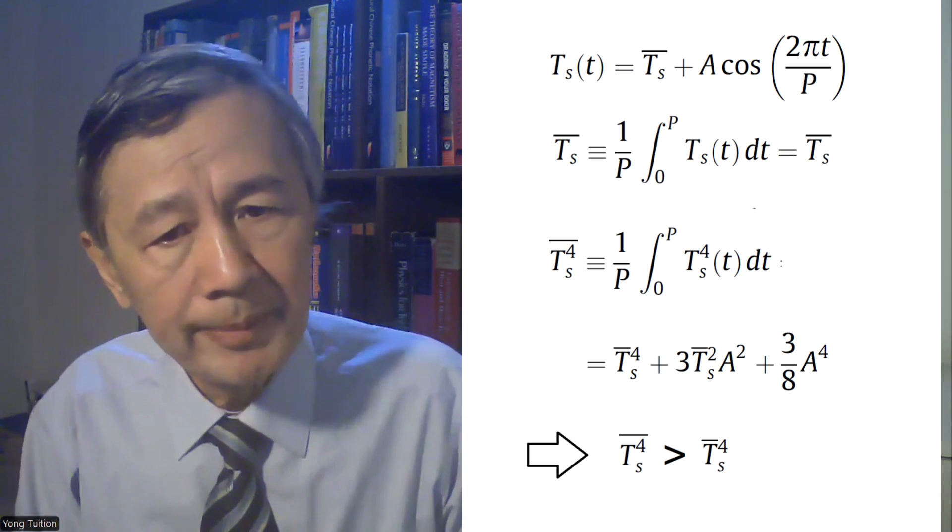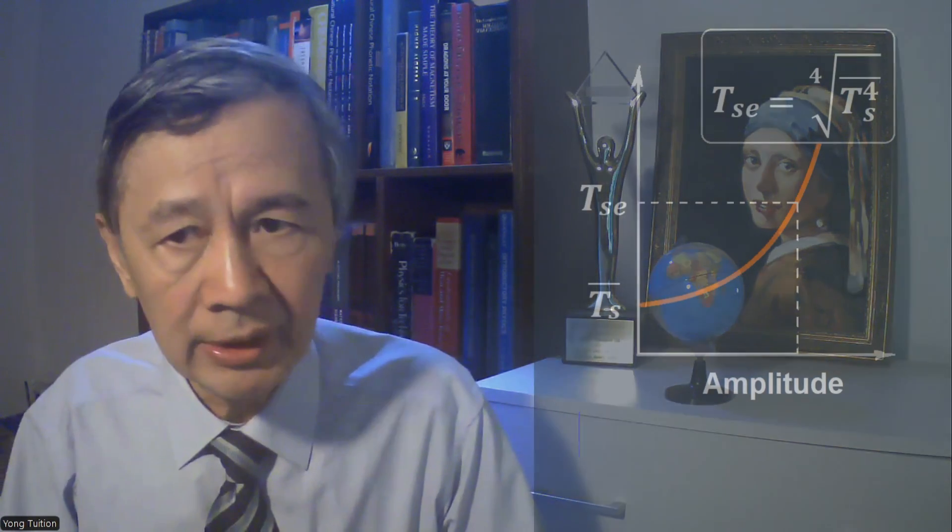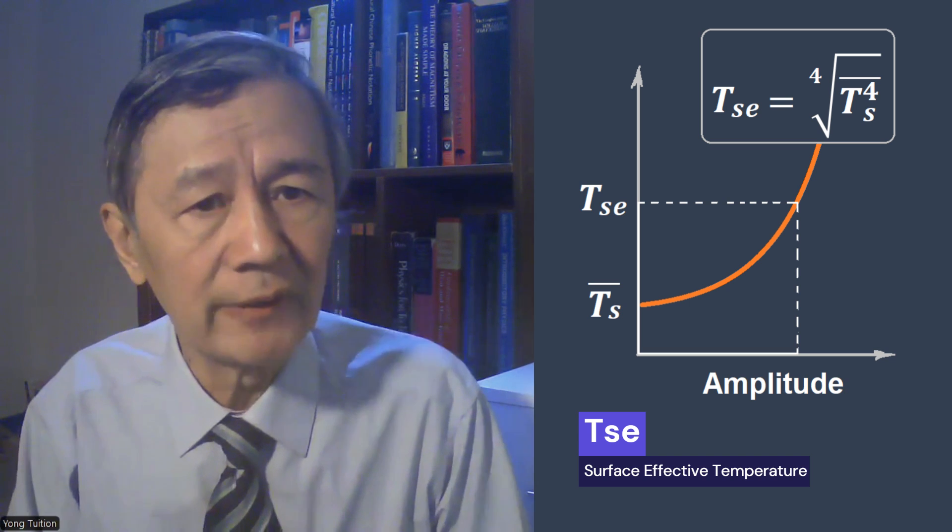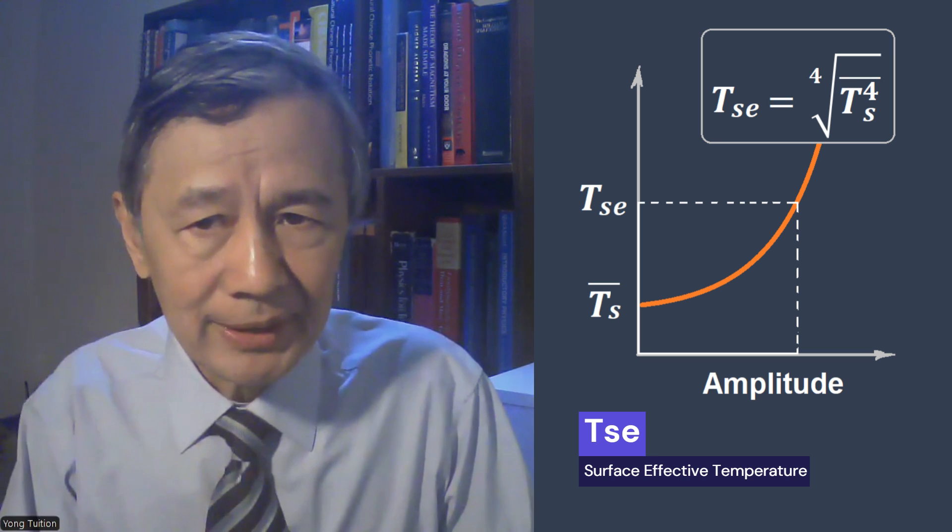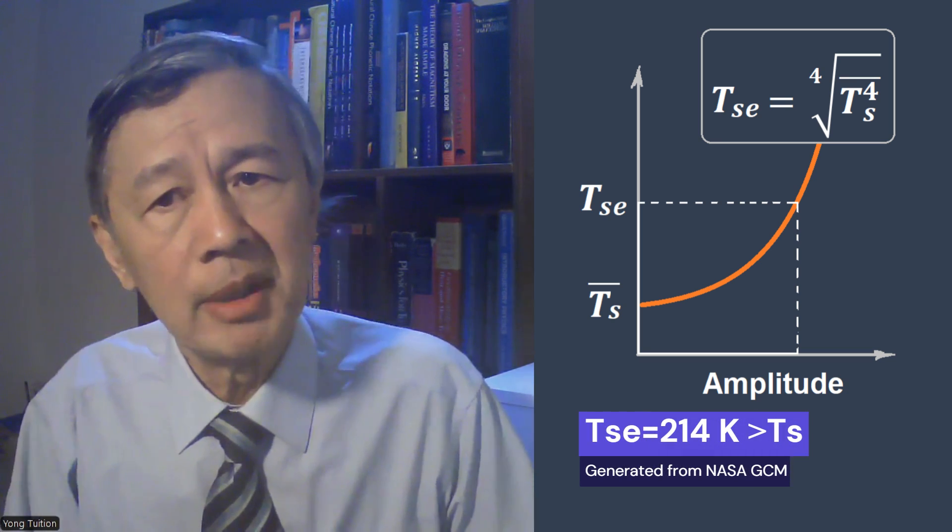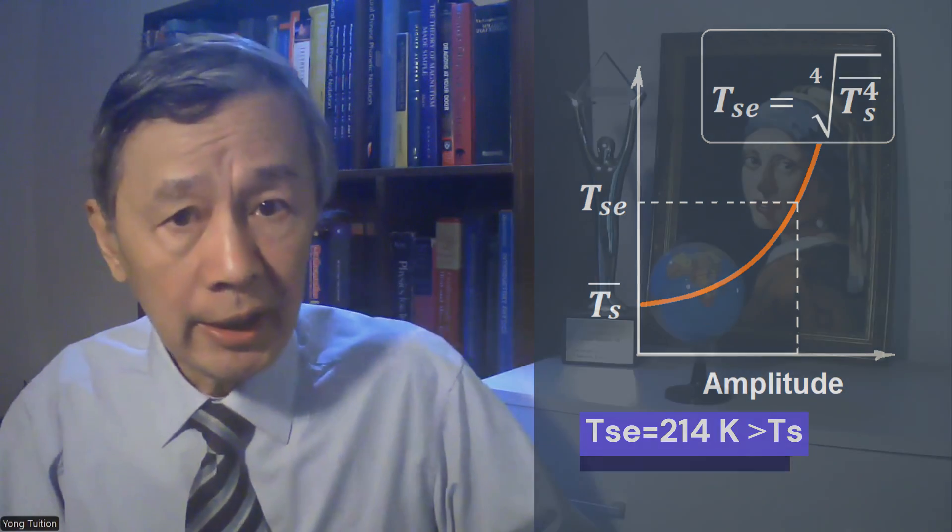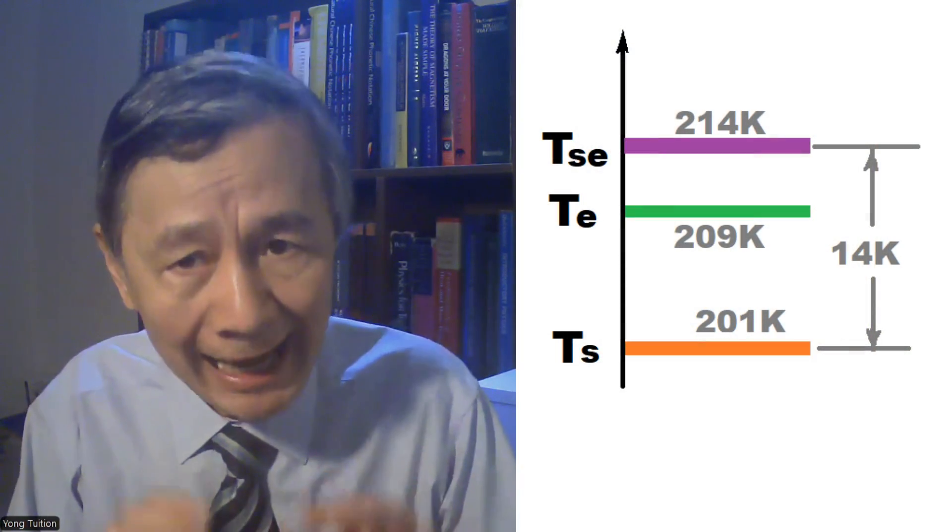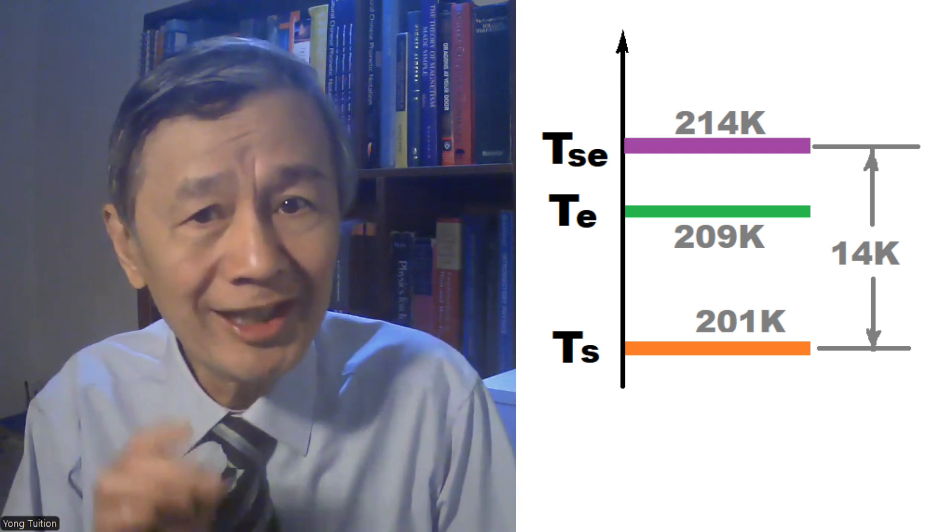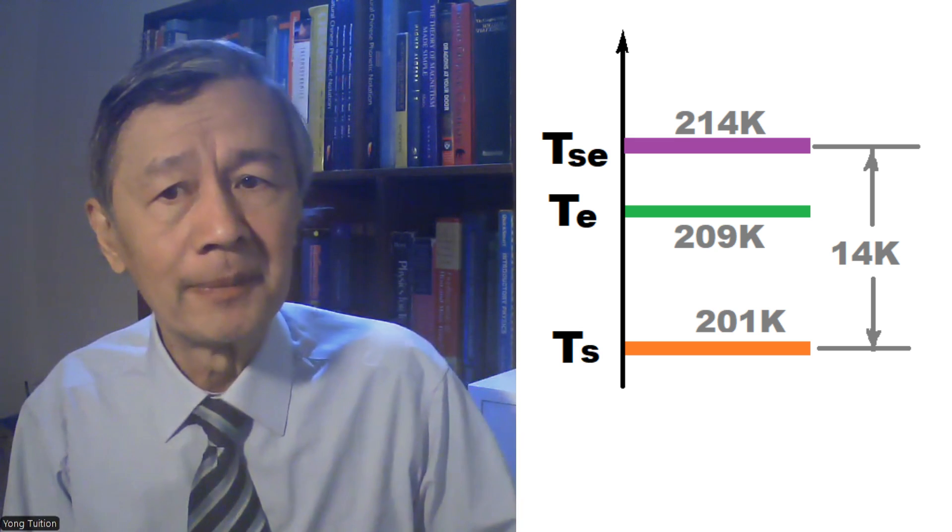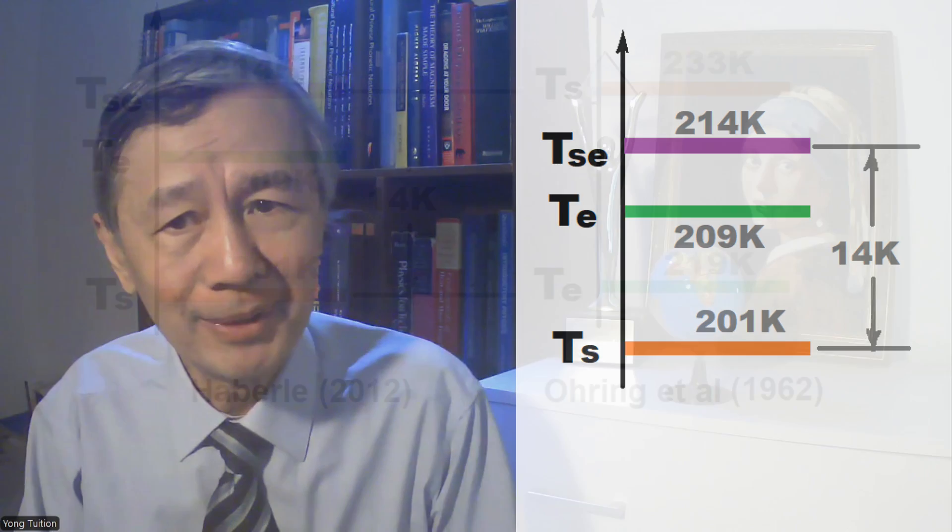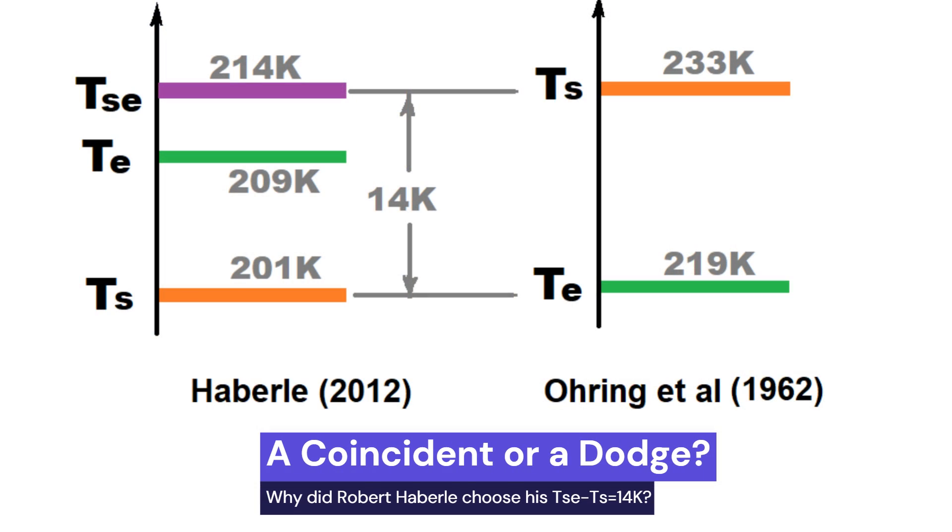On Mars, as argued by Haberle, A could be very large, and the changes could be non-linear. As a result, the mean surface temperature relevant to the Stefan-Boltzmann law can be significantly underestimated. He introduced the surface effective temperature, or Tse, to denote his new mean surface temperature. According to Haberle, this temperature can be obtained from a NASA Mars general circulation model, close to 214 Kelvin. He also used 201 Kelvin for the traditionally averaged surface temperature for Mars, which is 14 Kelvin lower. Do you remember the maximum greenhouse effect predicted in 1962 is also 14 Kelvin? What a coincidence!